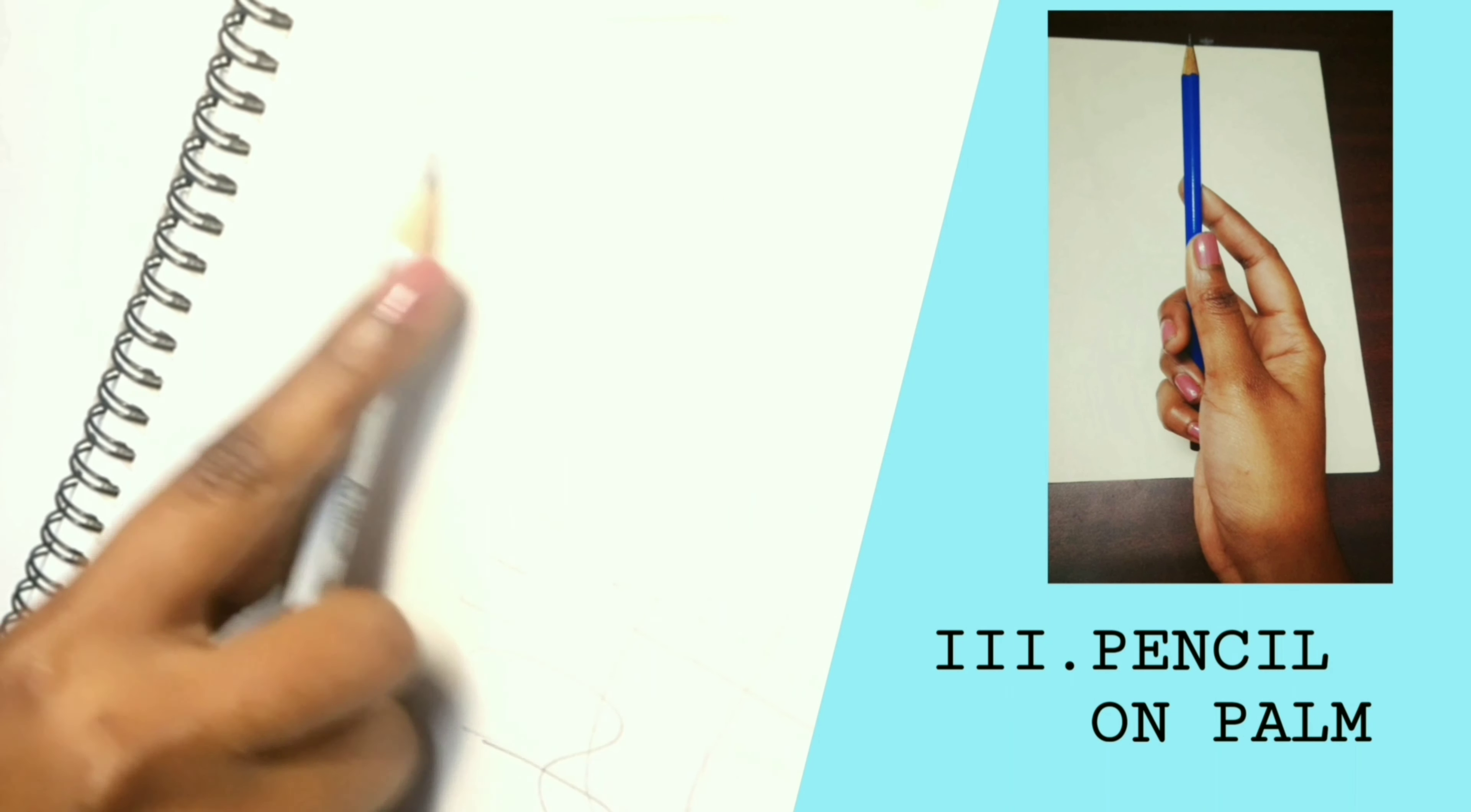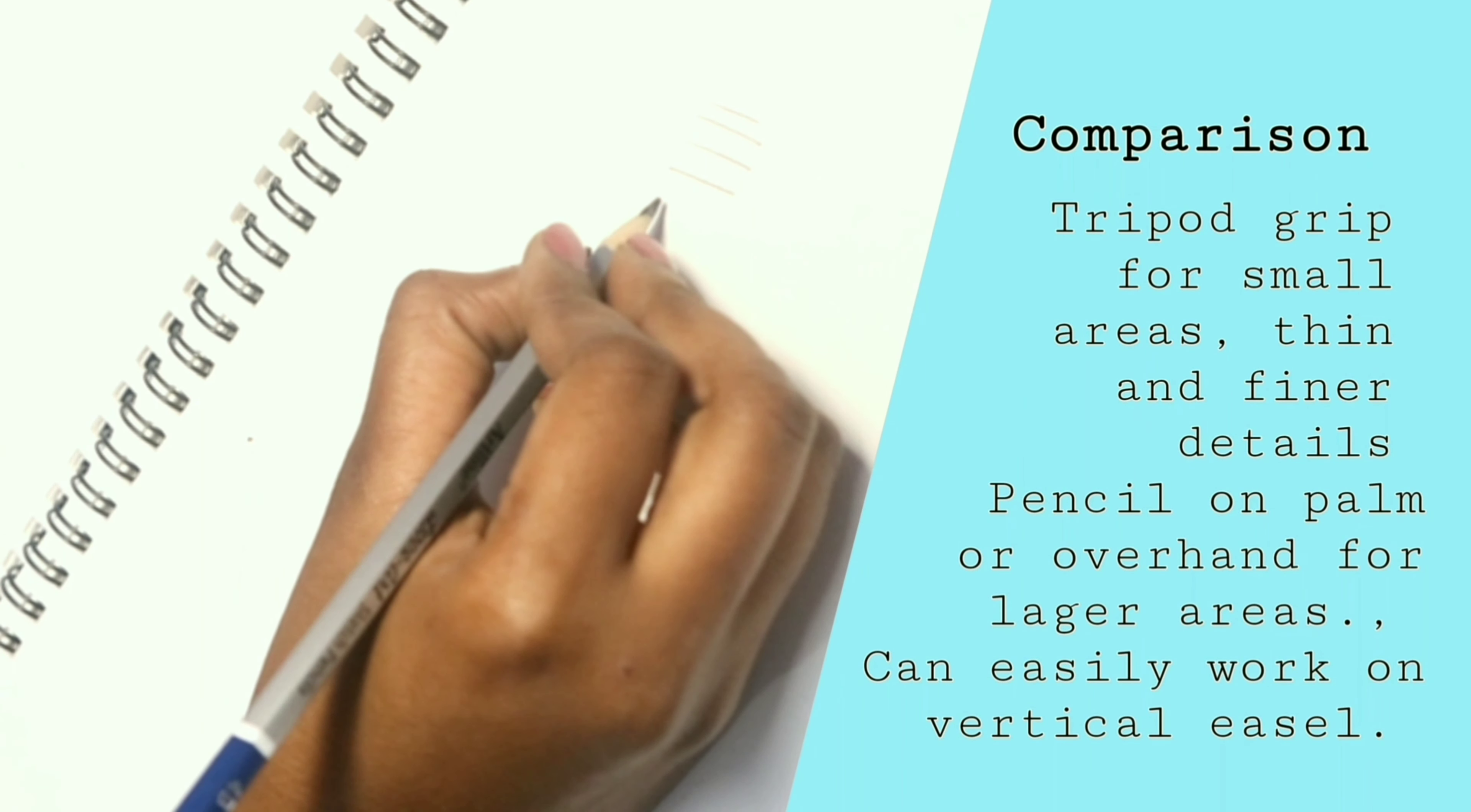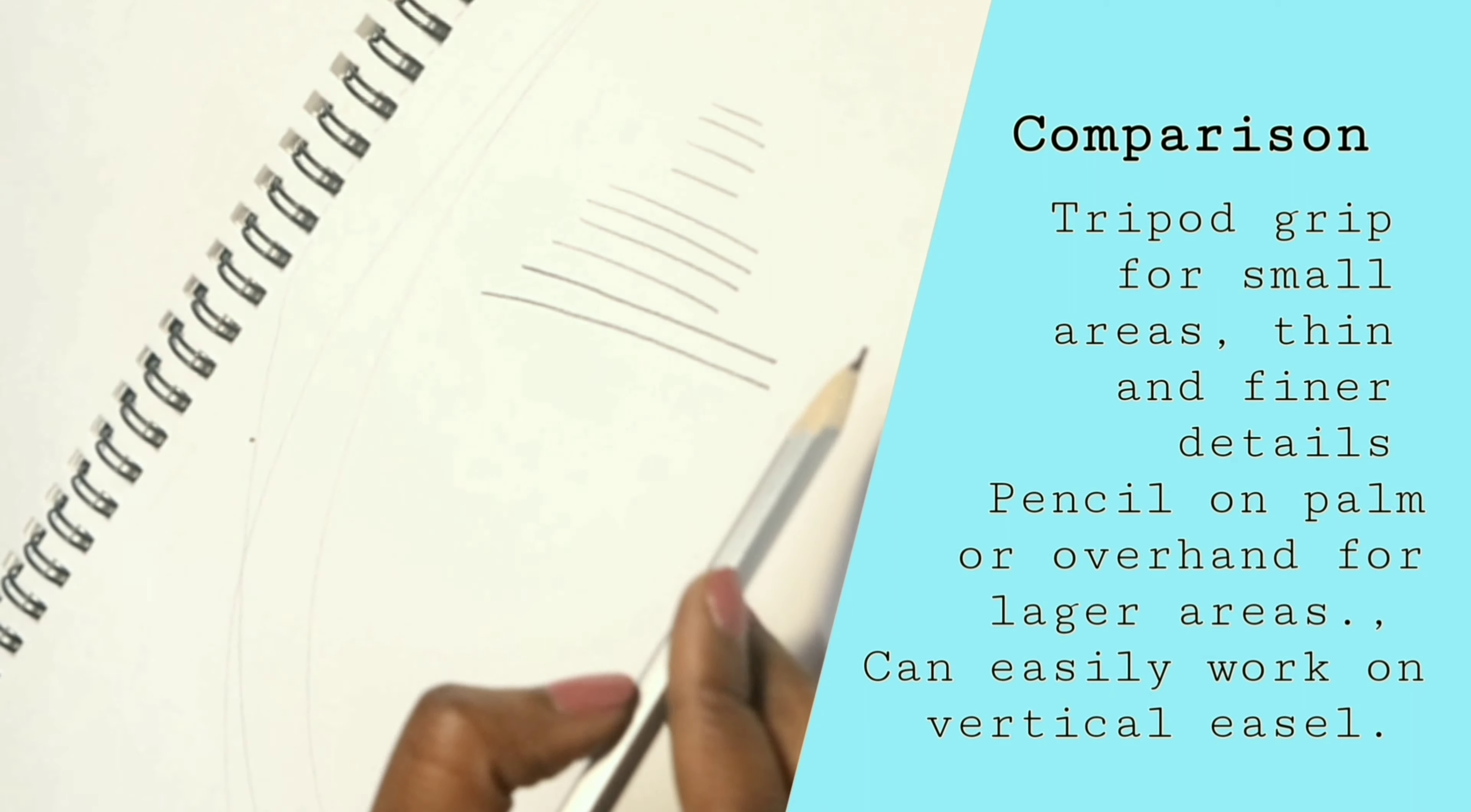So in tripod grip we can draw thin, short, and fine details, but as it limits the hand movement, it causes problems while working on a vertical or slanted easel.